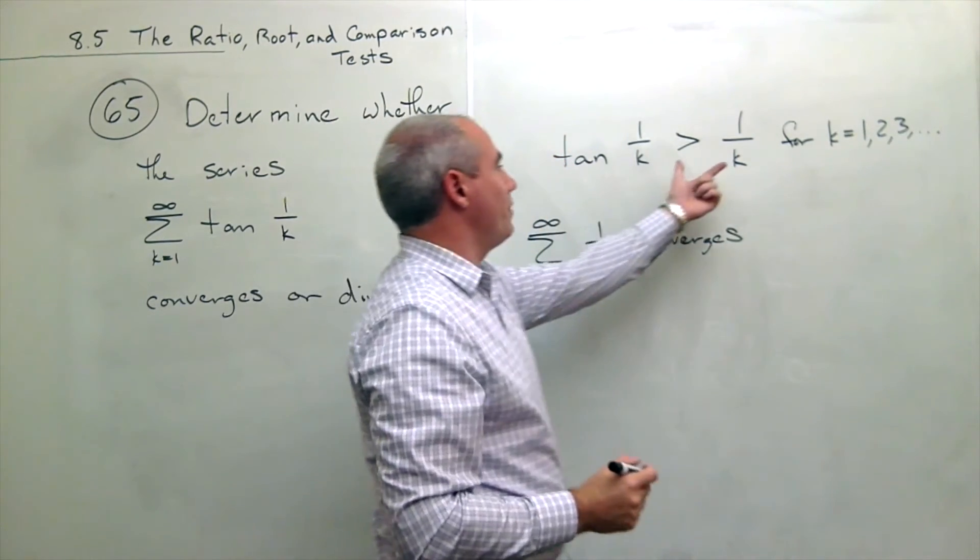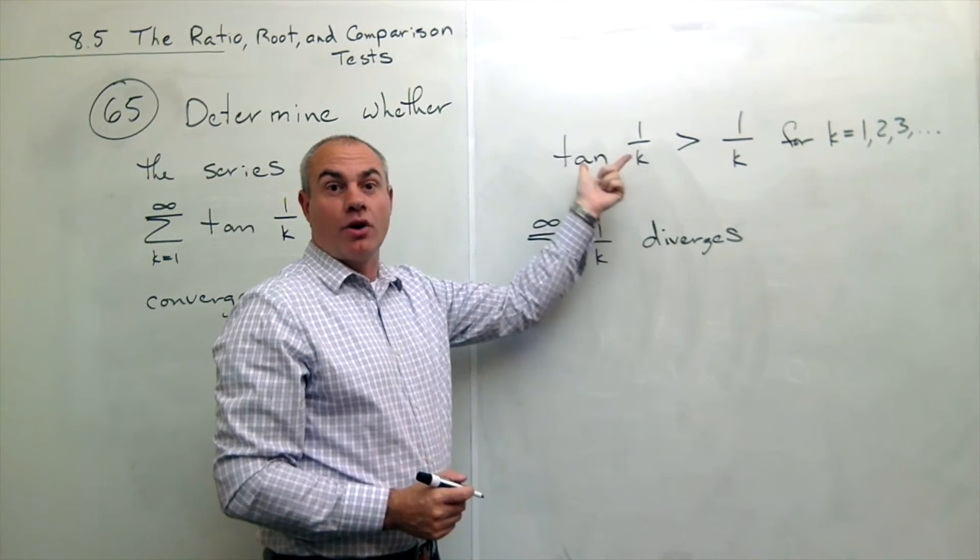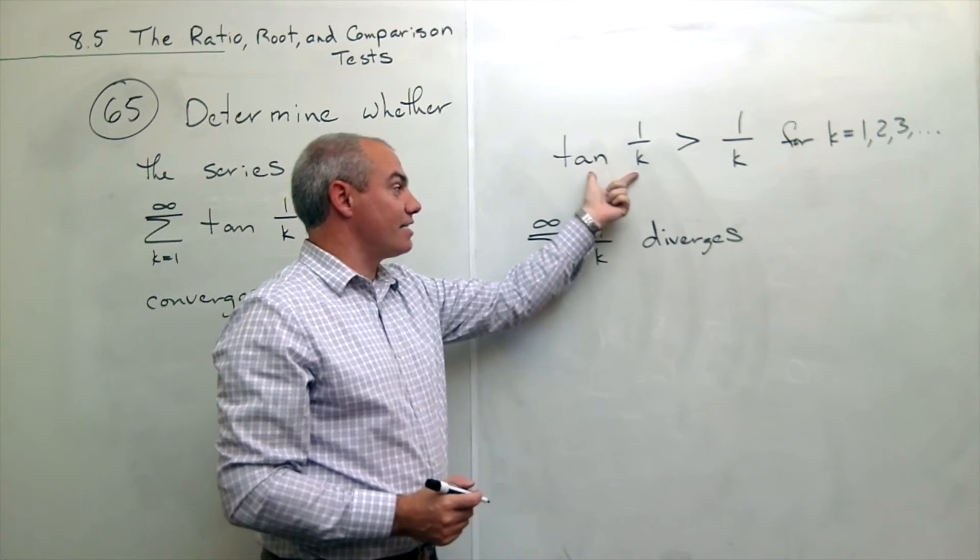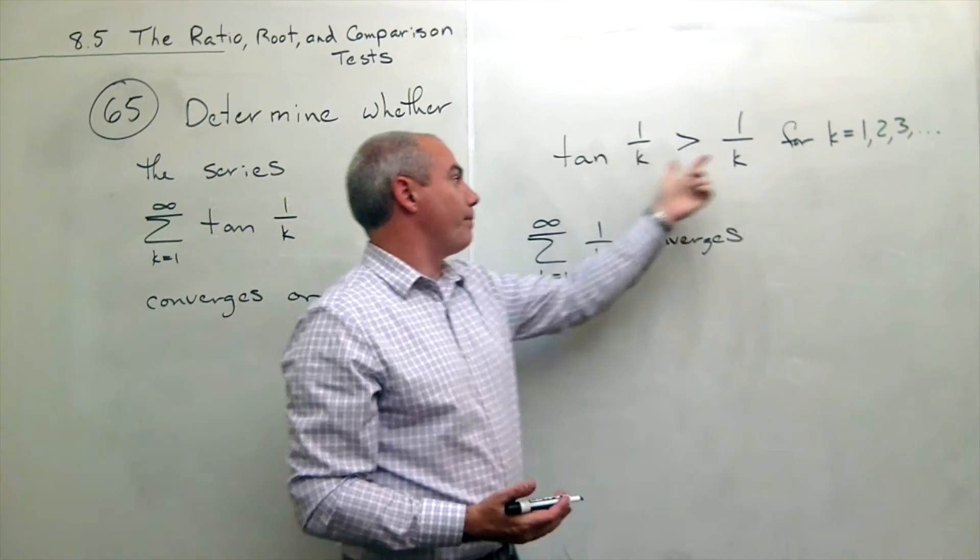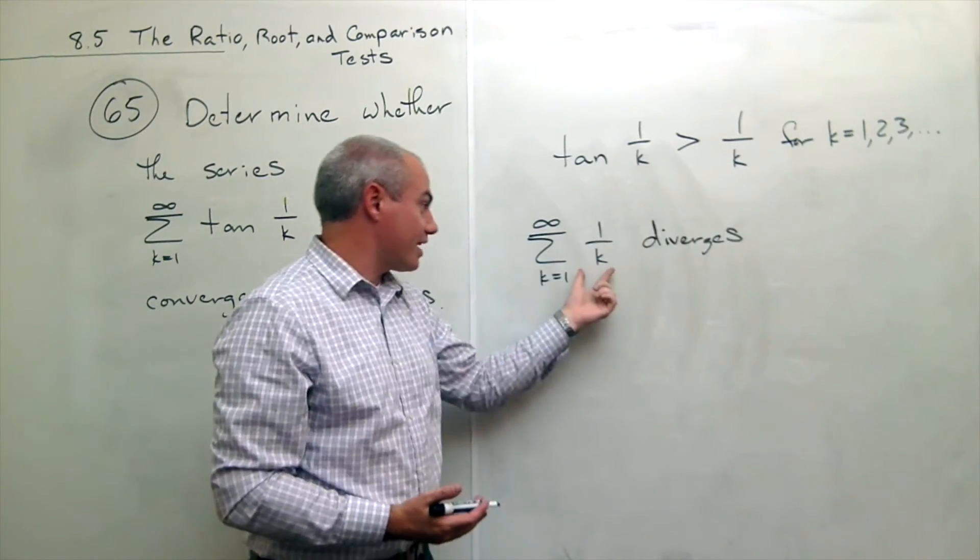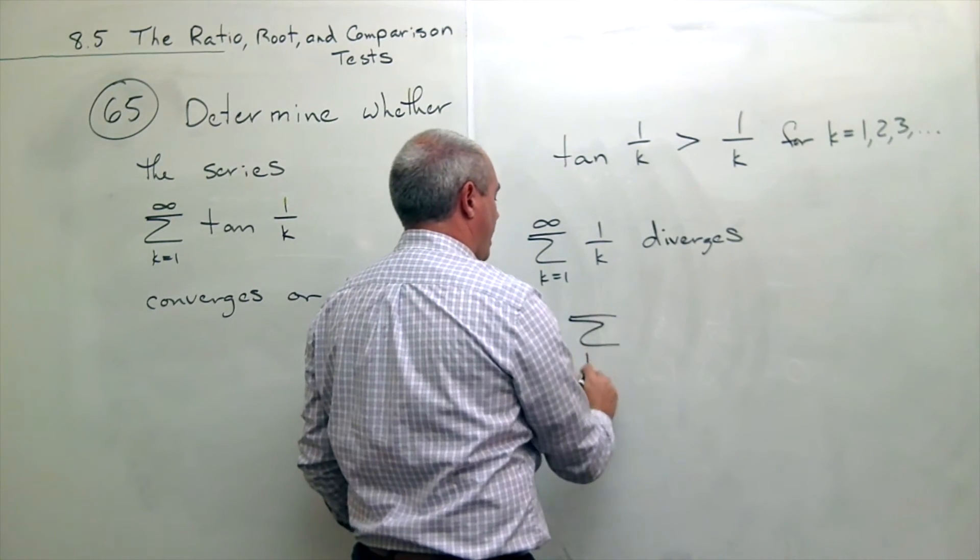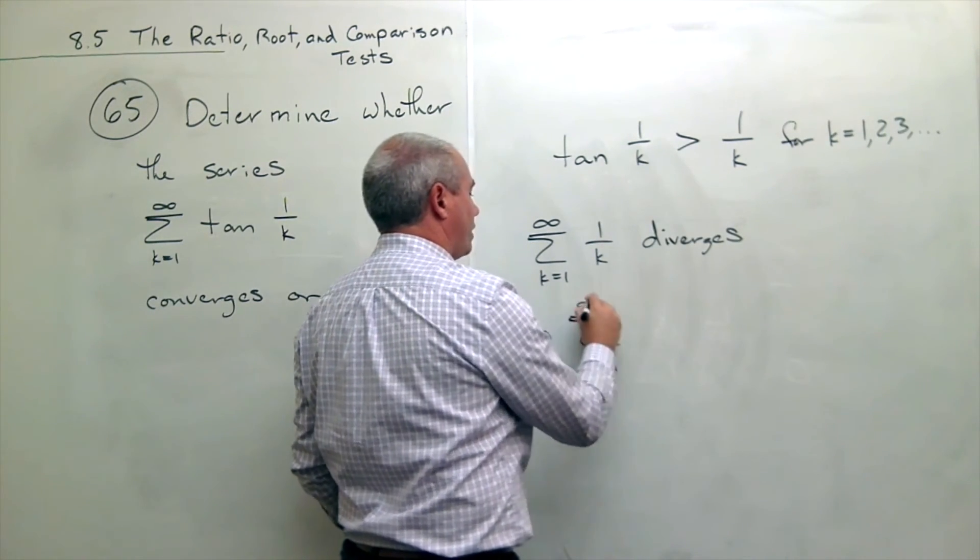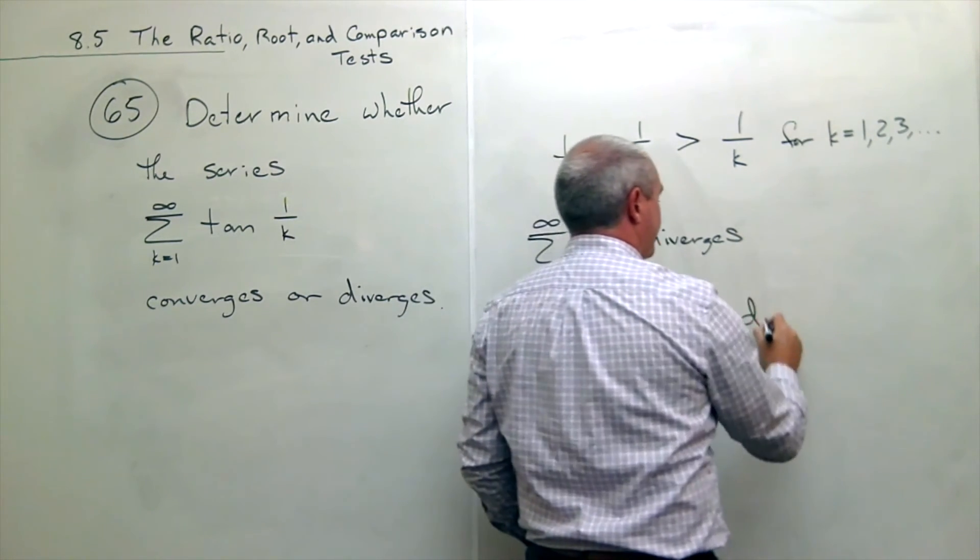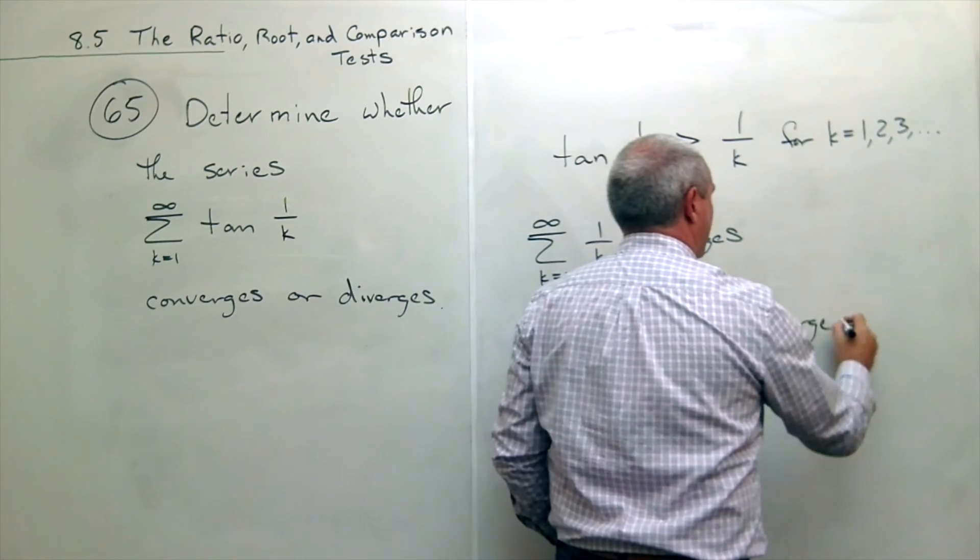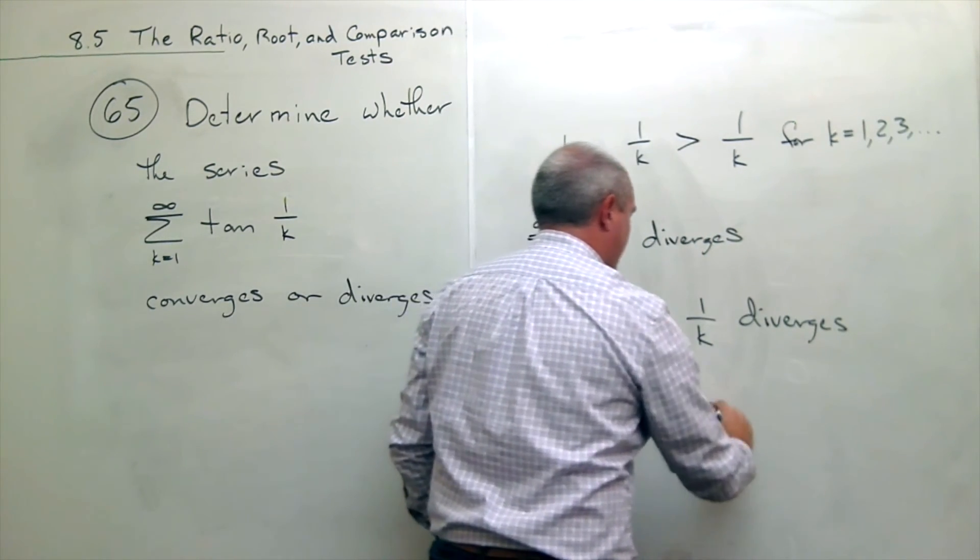If the sum of these guys diverges, these are even bigger. So if I summed up all of these guys, it would definitely diverge, because I'm adding up values that are bigger than a bunch of things that I add up and they diverge. So the sum k going from 1 to infinity of tangent of 1 over k diverges. And we say that this diverges by the comparison test.